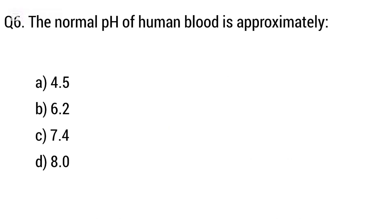Question 6. The normal pH of human blood is approximately? The right answer is option C: 7.4.